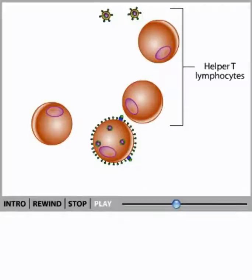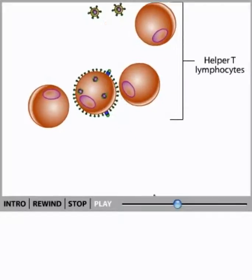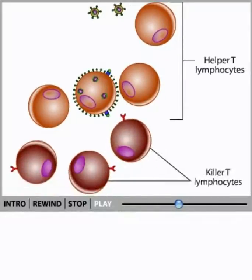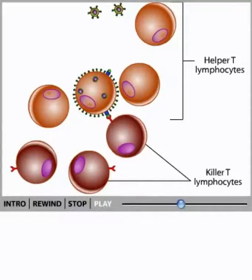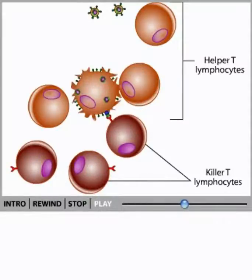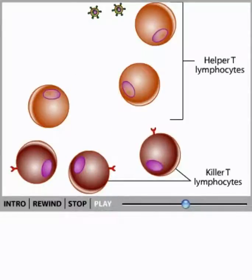Although the immune system eventually loses its battle with HIV, it does put up a good fight. The main defenses come from killer T lymphocytes. Some of the body's killer T lymphocytes recognize pieces of the virus that are displayed on infected cells. A killer T lymphocyte releases chemicals that burst the infected cell, thereby killing it and preventing it from producing more viruses.